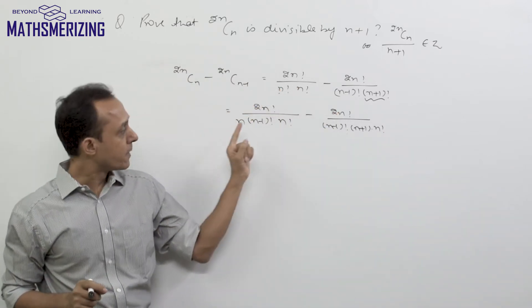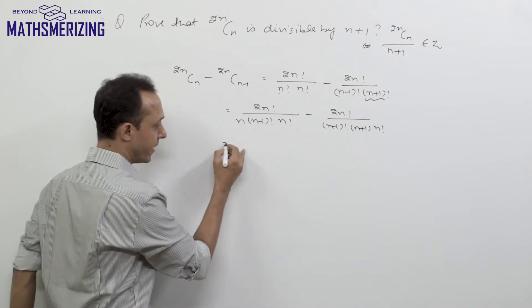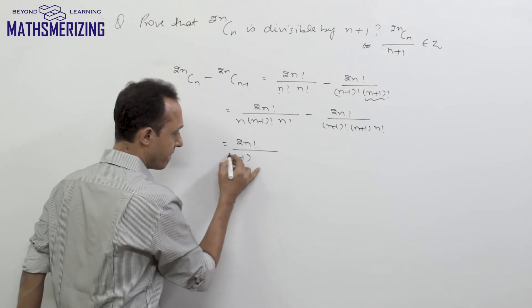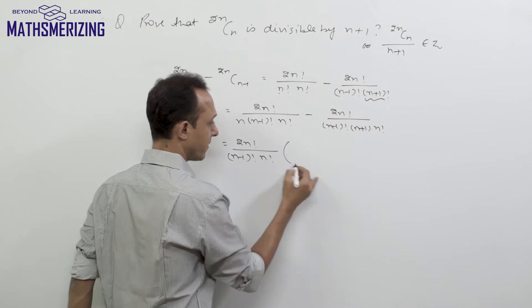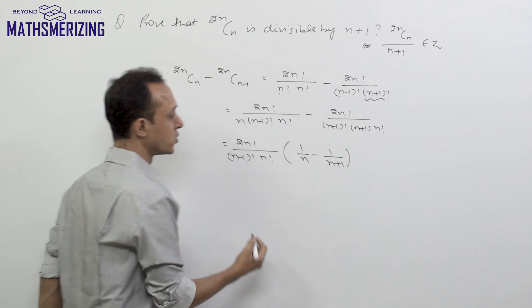Now here I can take (2n)!, (n-1)!, and n! common. So if I take them common, I can write it as (2n)!/((n-1)!·n!) times [1/n - 1/(n+1)].